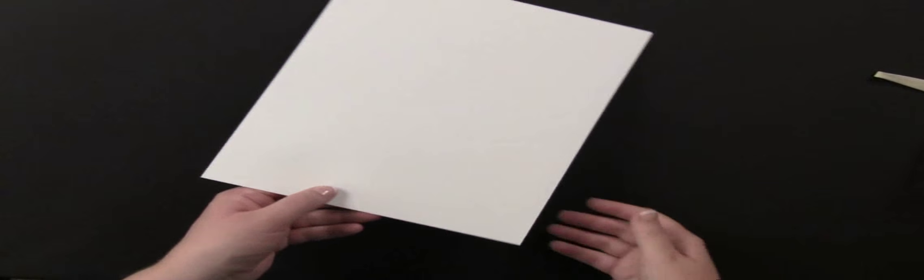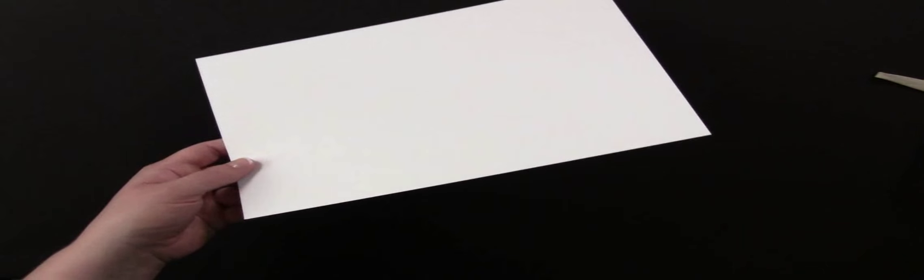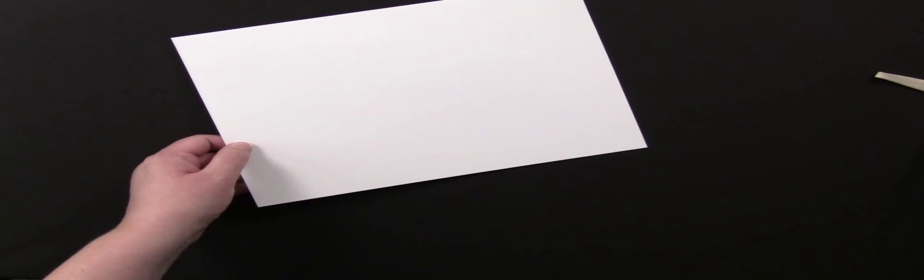So the first thing you're going to need is some bright white cover cardstock. I used this Wausau bright white cover from my local copy center. I love it because it's very crisp and whiter than normal white cardstocks, and that's what I wanted in this project.